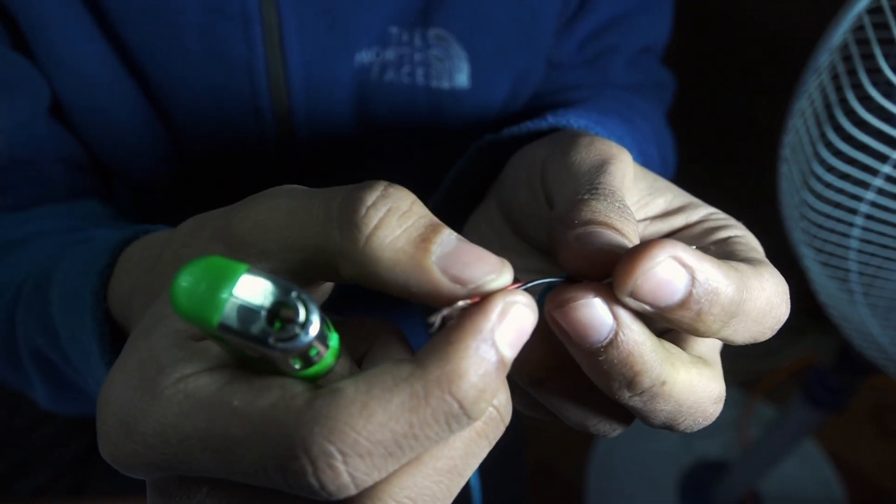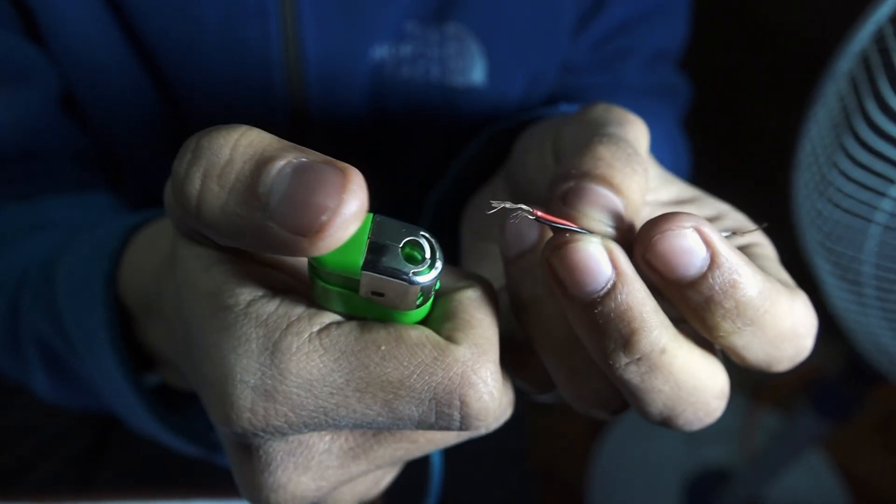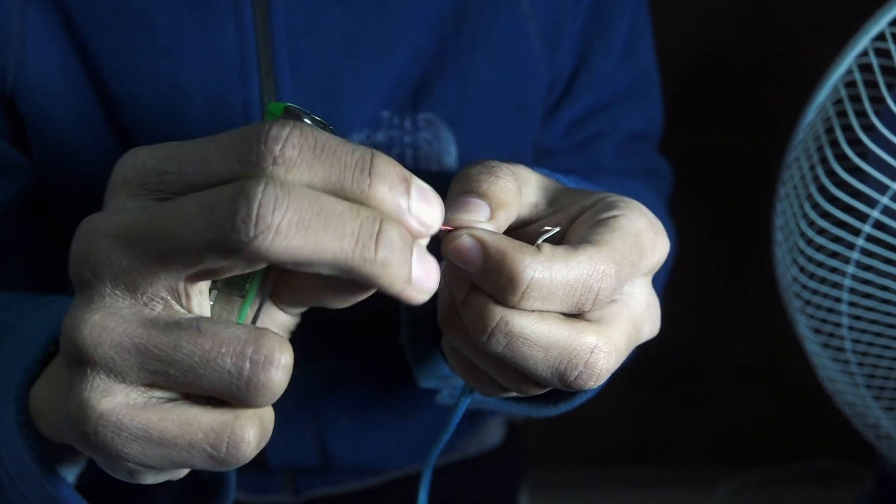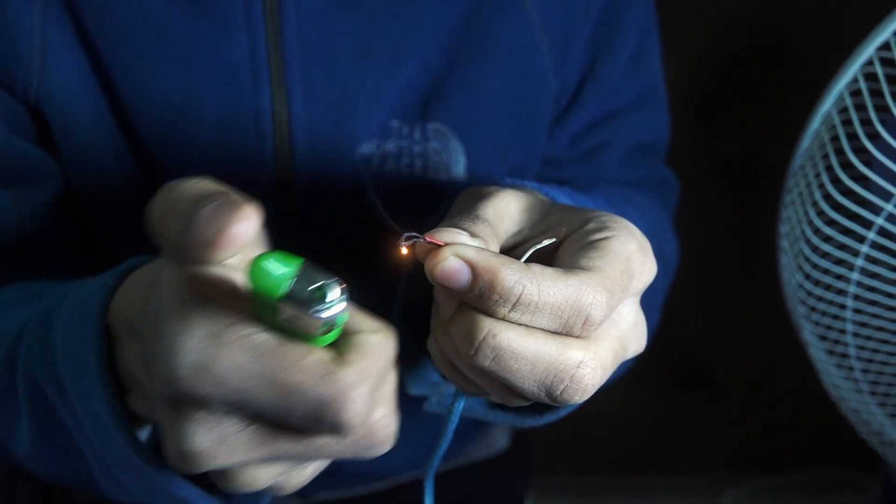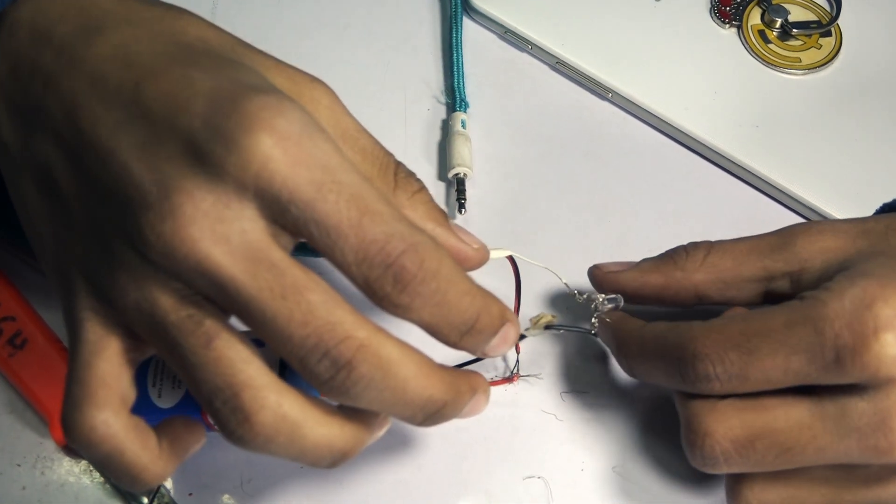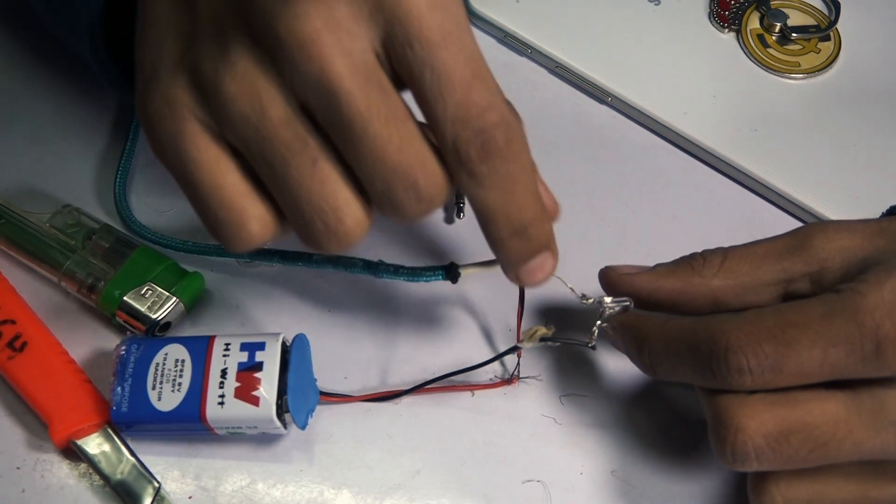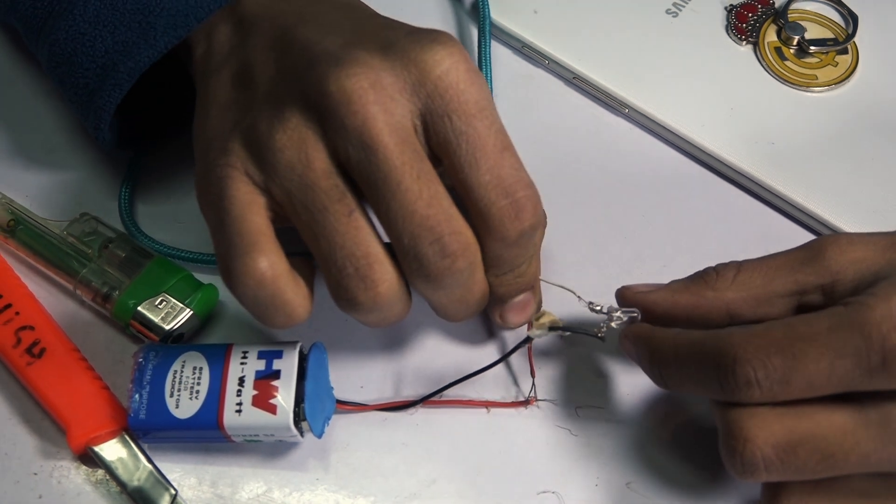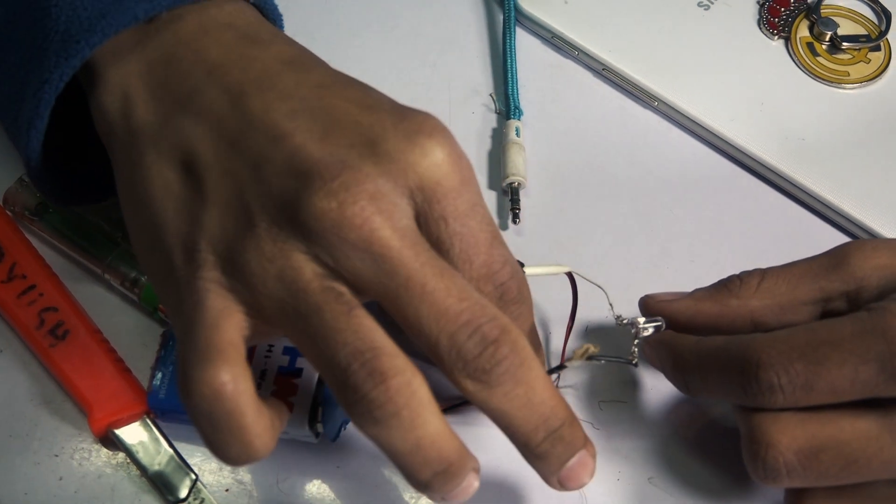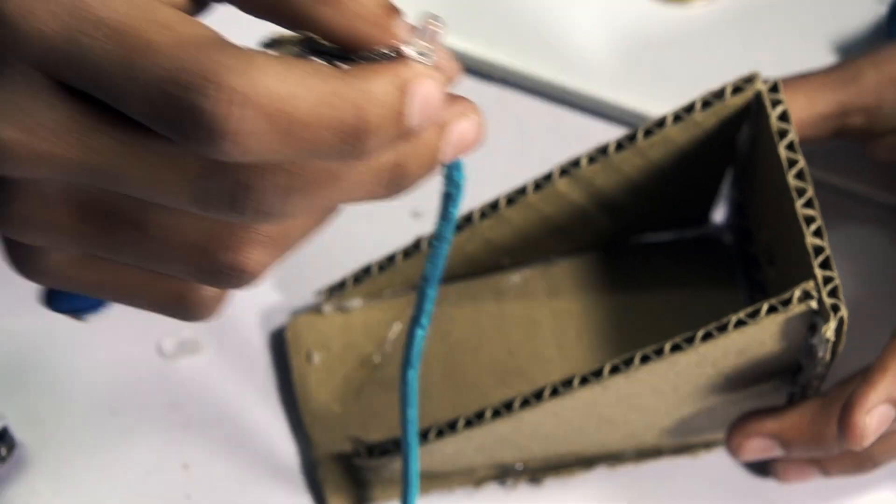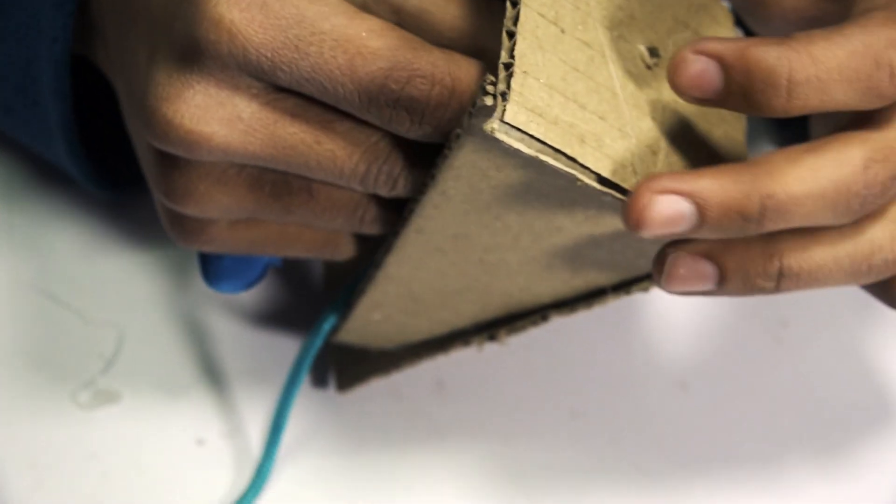So we will connect this black and red wire which are also right speaker and left speaker. So this negative of battery is connected to the negative of bulb, and the ground of audio cable is connected to the positive of bulb, whereas this right and left speaker are connected to the positive of battery. So let's connect this again.